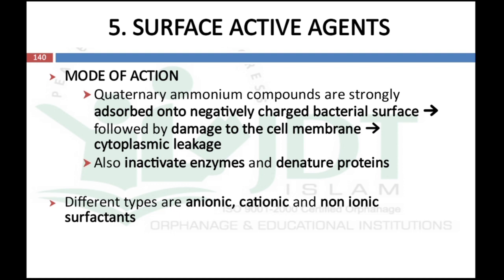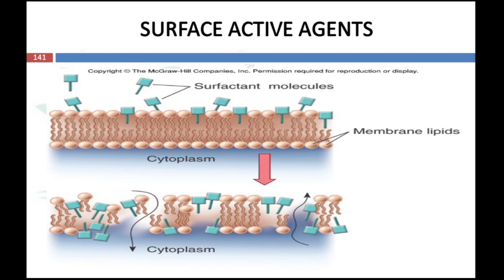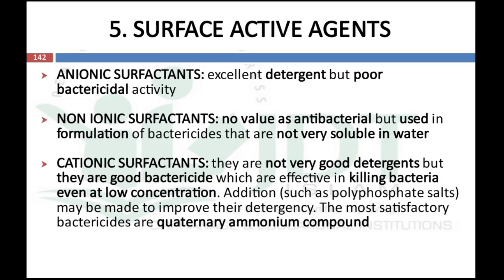The next group is surface active agents. Quaternary ammonium compounds act by strong adsorption onto the negatively charged bacterial surface, thereby damaging the cell membrane, leading to cytoplasmic leakage of essential material from the cell, and by inactivation of enzymes and denaturation of proteins. Different types of surface active agents are anionic, cationic, and non-ionic surfactants. The mechanism is disruption of membrane structure, producing leakage of essential material from the cell. Anionic surfactants are excellent detergents but have poor bactericidal activity.